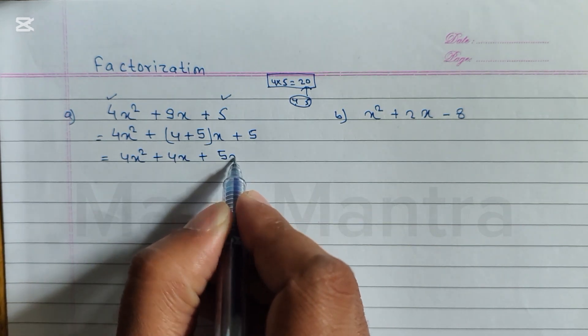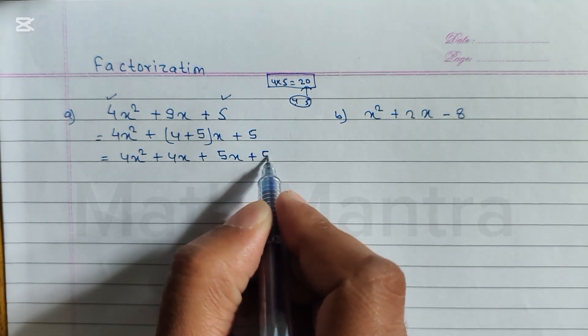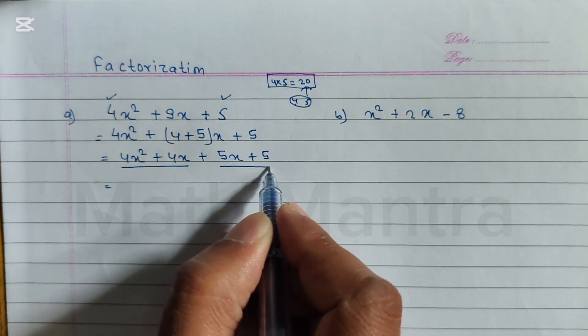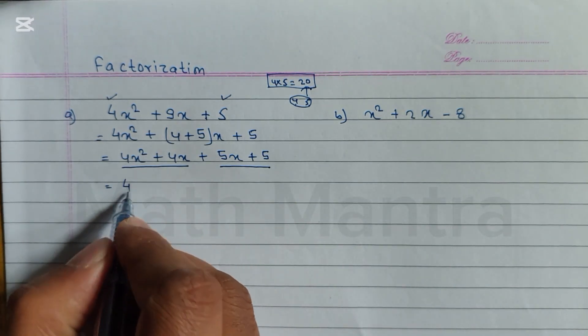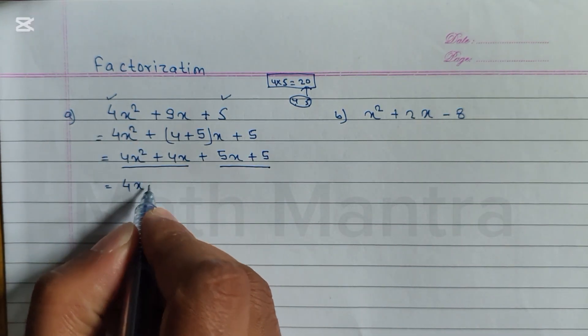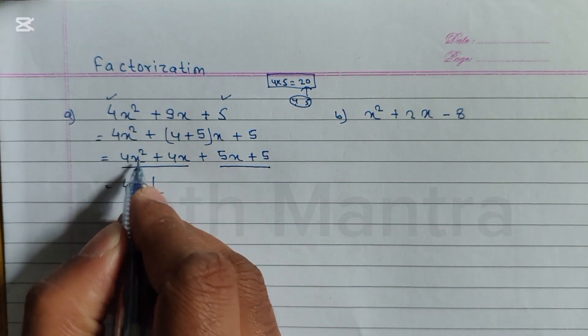Now from first two terms we have to take common, from last two terms we have to take common. 4 and here also 4, so we can take 4 common. From x² we get 2x and here is 1x, so we can take x common. 4 is already common from x², 2x times 1x is common, so remaining is x plus 1.